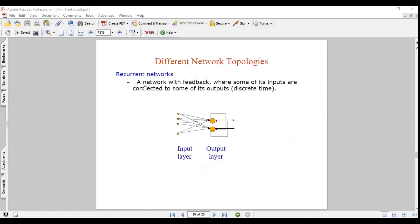Recurrent networks: a network with feedback, where some of its inputs are connected to some of its outputs. This is called discrete time. Input layer, output layer, but with recurrent connections.